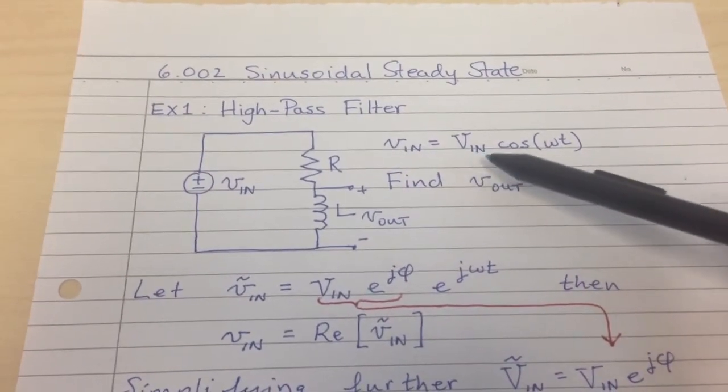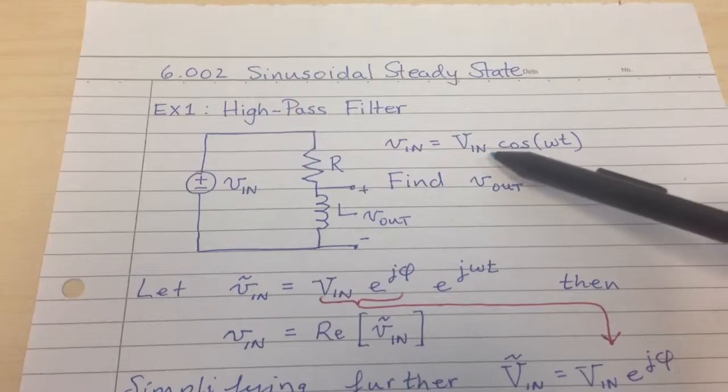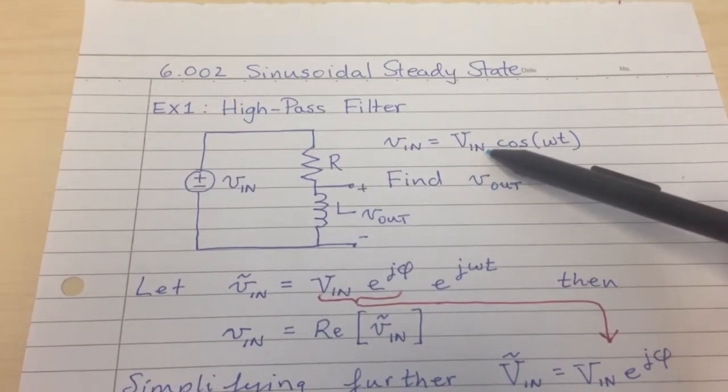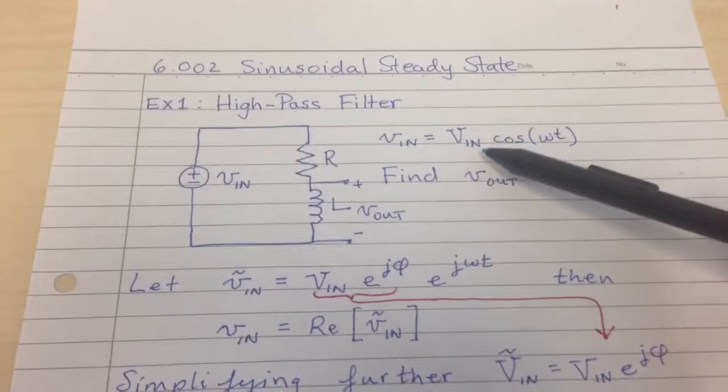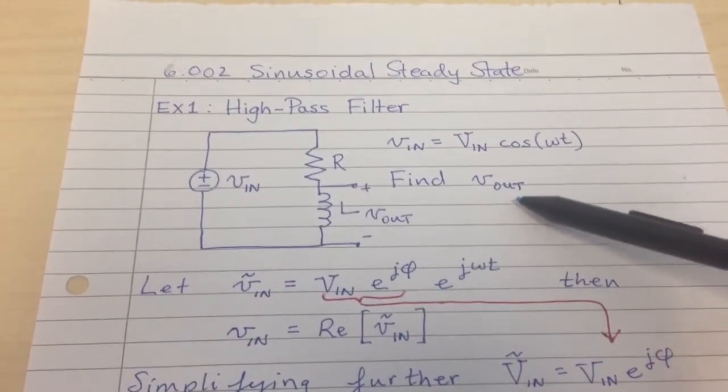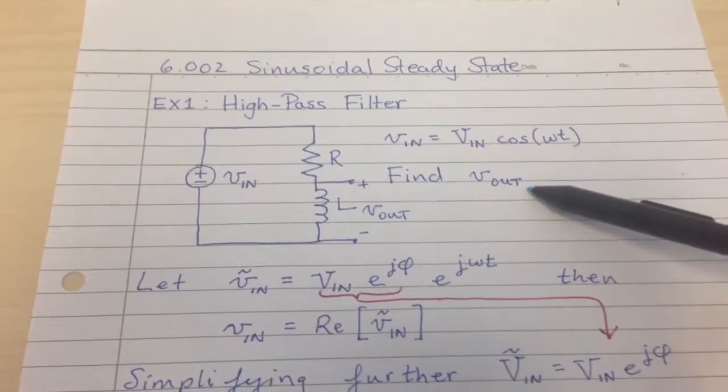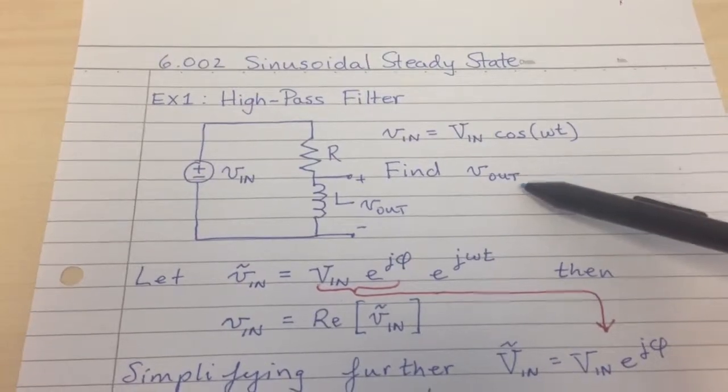The input voltage is a cosine, so it's a sinusoidal function with real amplitude V_in, that's just some number like 3 volts or something. And we're being asked to find V_out, which should also be a sinusoidal function with some amplitude.